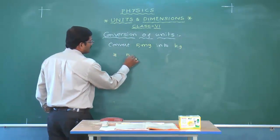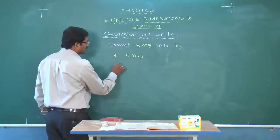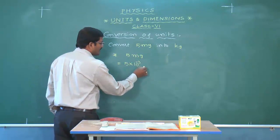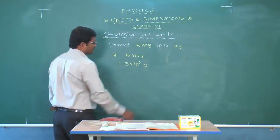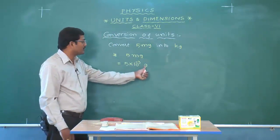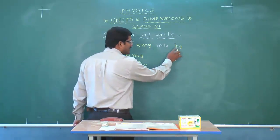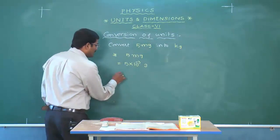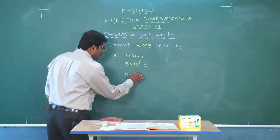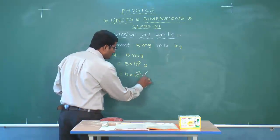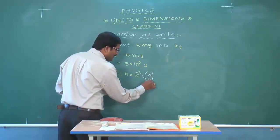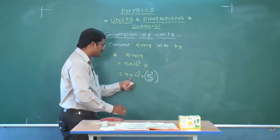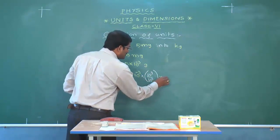Write the given value first: 5 milligrams. Convert milli into its numerical value — 10 to the power of minus 3 — so we have 5 times 10 to the power of minus 3 grams. Now I have to convert this into kilograms. The prefix kilo (k) is 10 to the power of 3. So I introduce a fraction equal to 1: 10 to the power of 3 in both numerator and denominator. That gives us the result in grams.